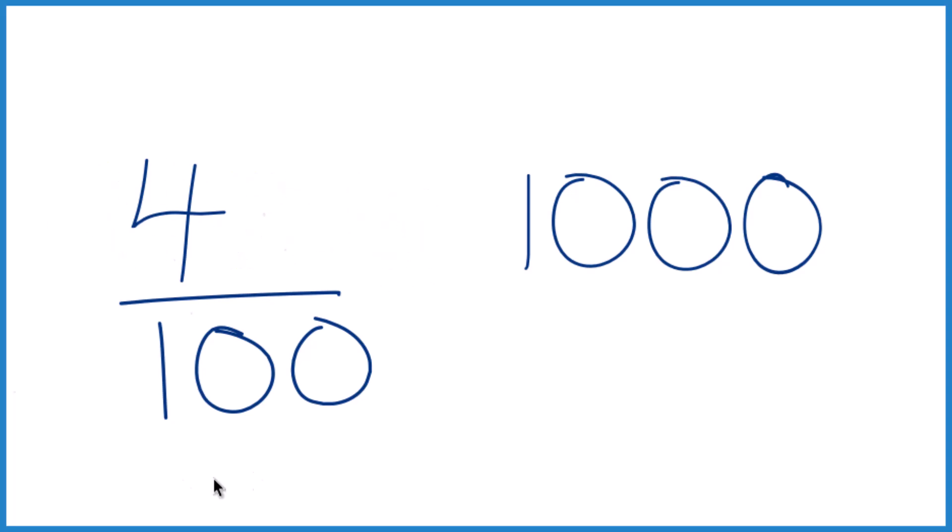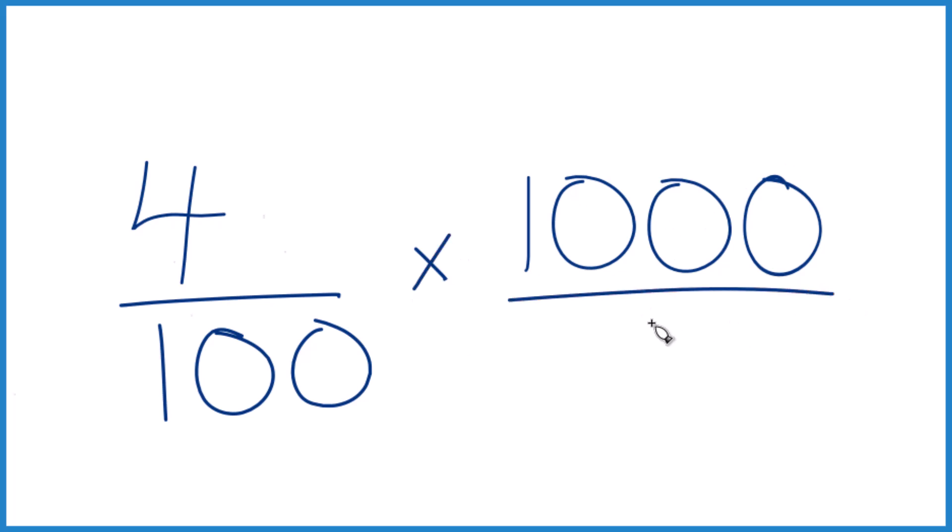And of, we're going to call of, that's multiplication. So let's call this 1,000 over 1. It's still 1,000, but everything lines up nice.